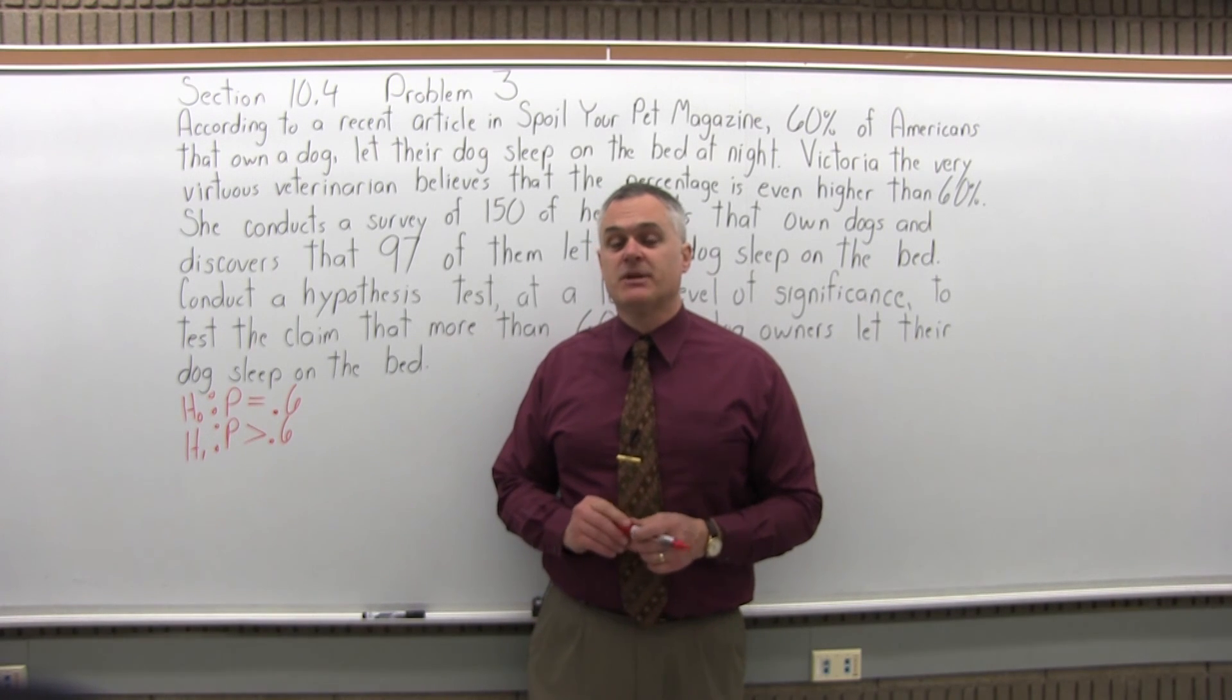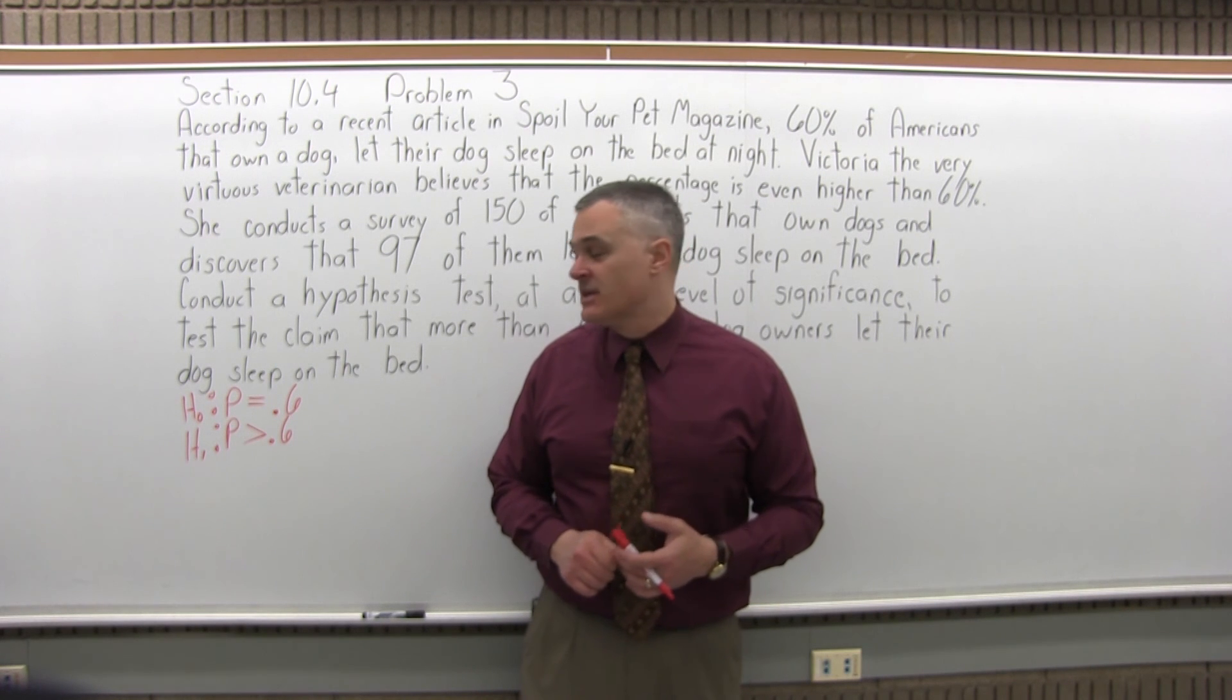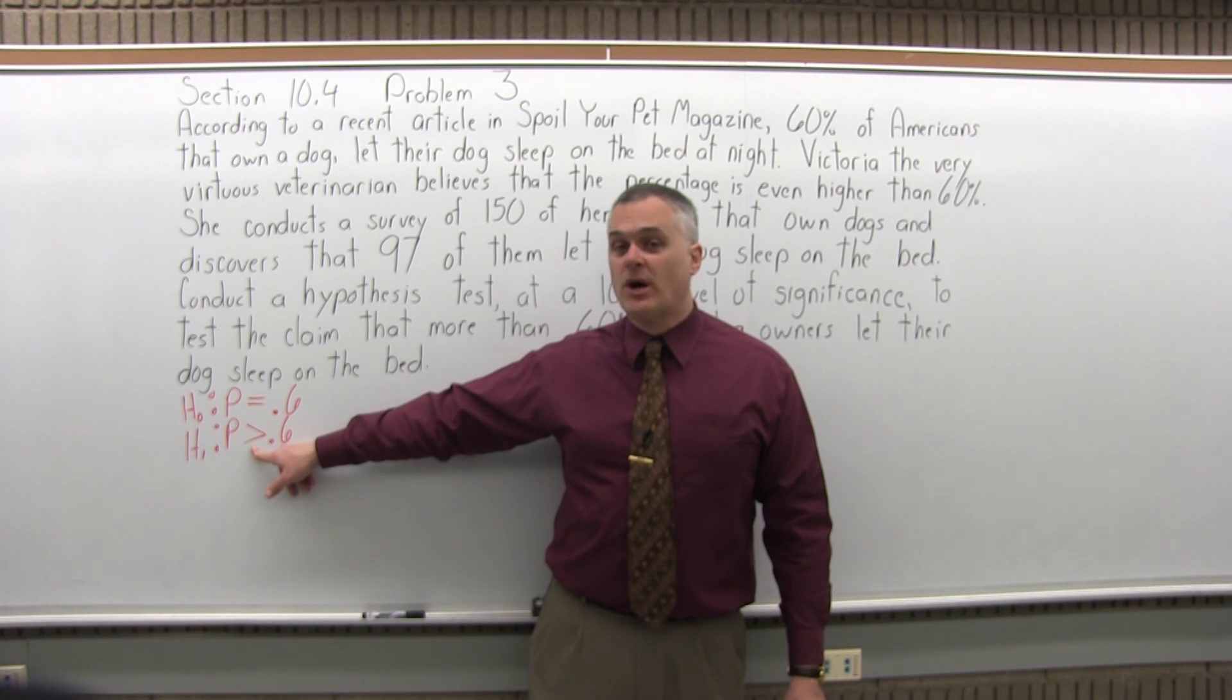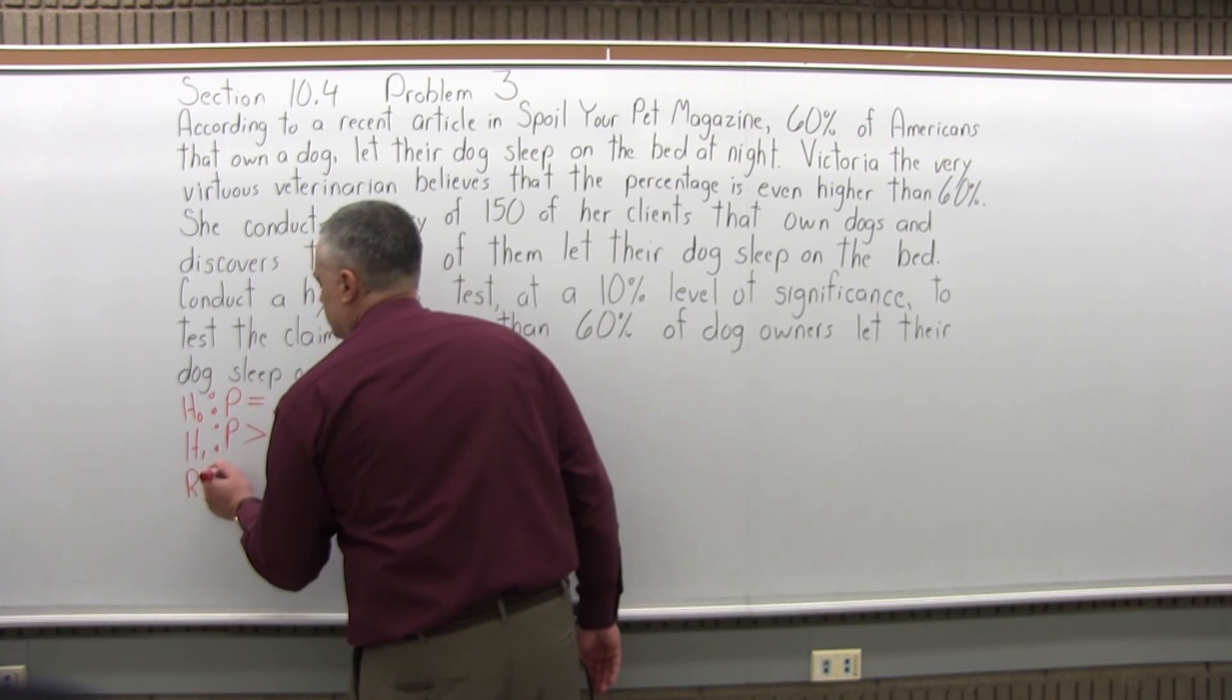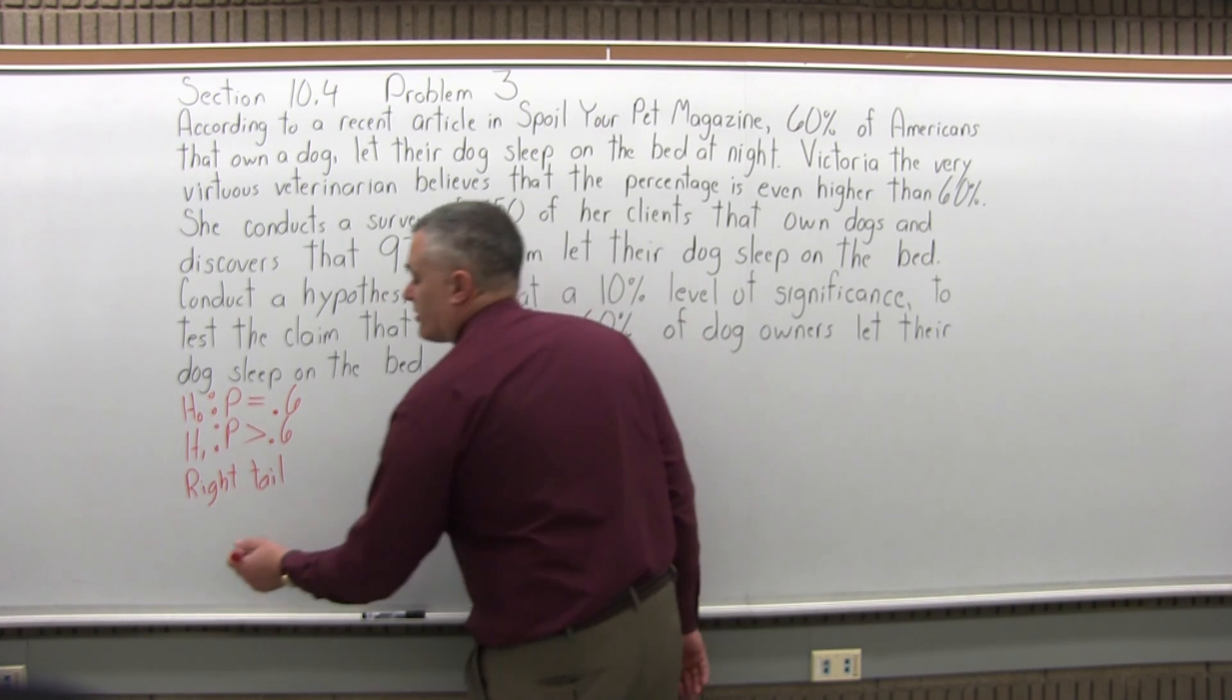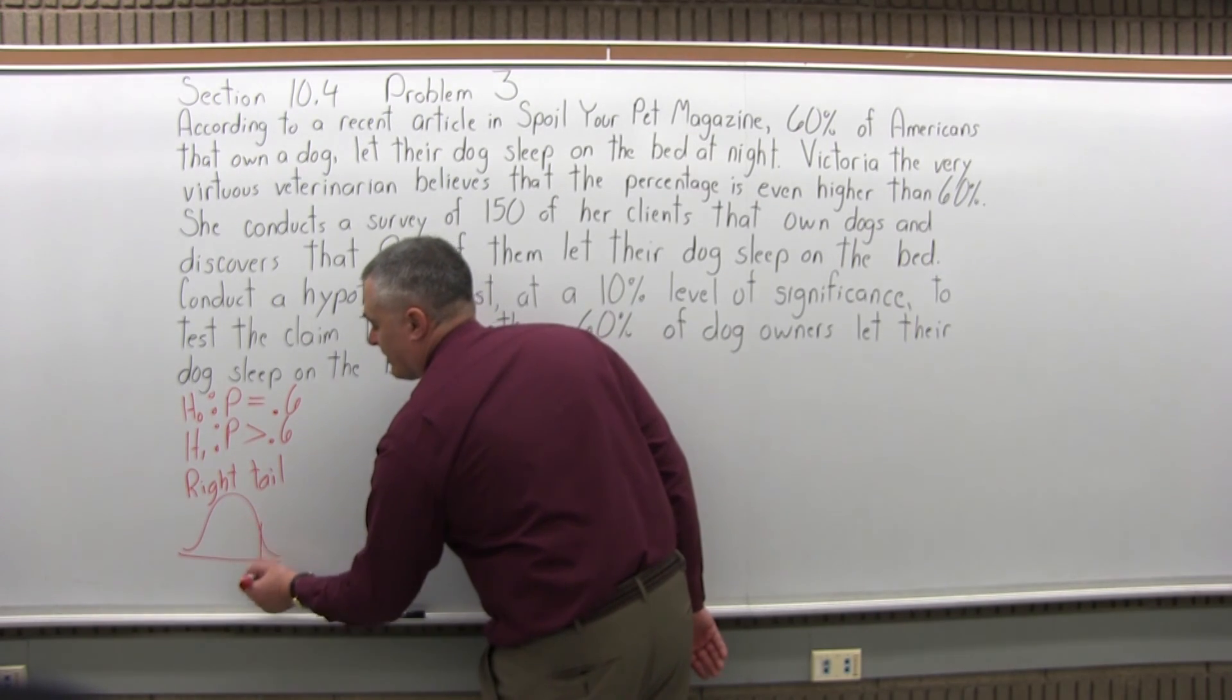Now the third step is what type of test is this? Is this a left tail test, right tail test, or two tail test? Look at the symbol in the alternate hypothesis. If it's an inequality symbol, look at the direction it's pointing in, and that will tell you what type of test you have. This greater than symbol points to the right, so this is a right tail test.